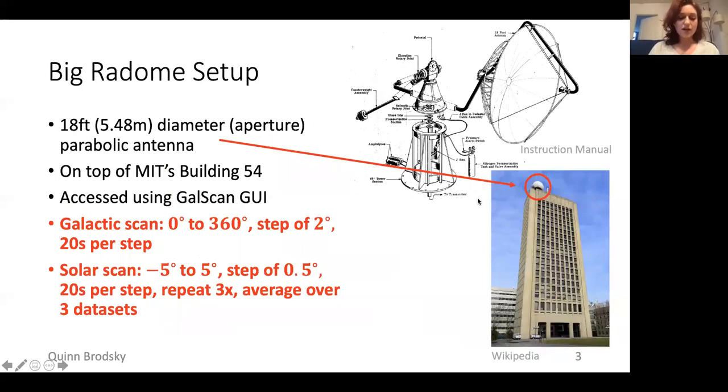We're going to be using the big radio telescope on top of building 54 at MIT, and this is an 18-foot aperture parabolic radio antenna. We access this remotely using a GUI. We're going to perform two analyses. One is going to be a galactic scan of the Milky Way, and the other is going to be a grid scan of the sun.